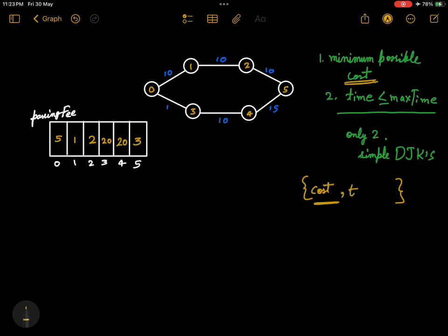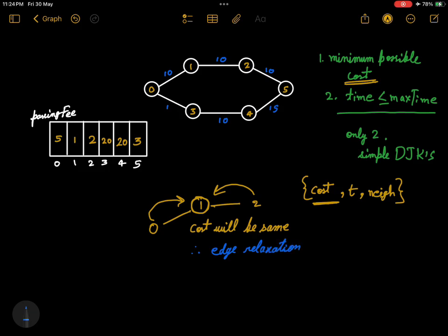One more thing: if we have three nodes numbered 0, 1, and 2, if we move from 2 to 1 or 0 to 1, the cost of passing this node will be the same, but the time will be different to reach from both nodes. So the edge relaxation will be for time.